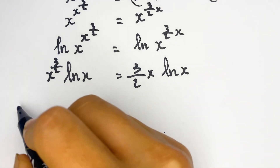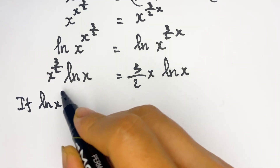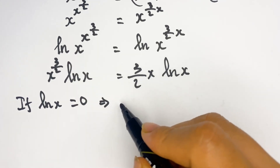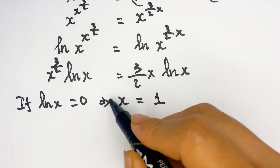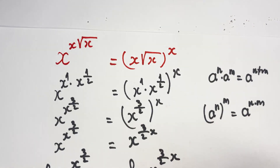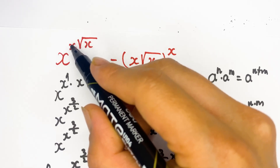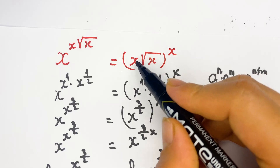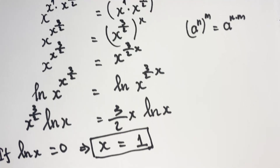Everyone can see that if ln(x) equals 0, then x equals 1. You can verify: 1^(1 · √1) = 1, so x equals 1 is a solution.